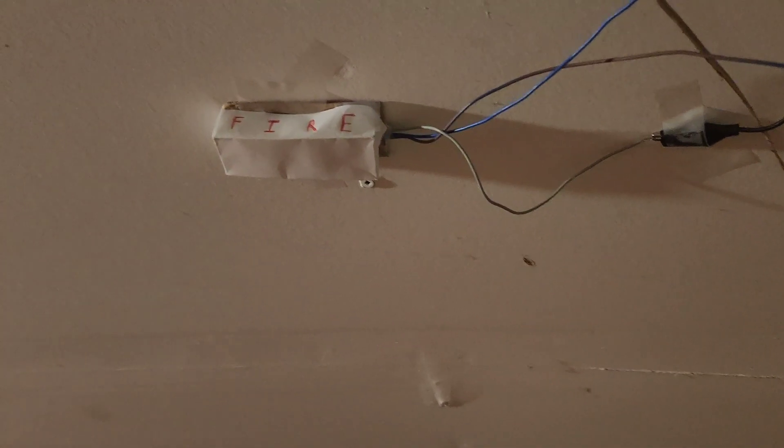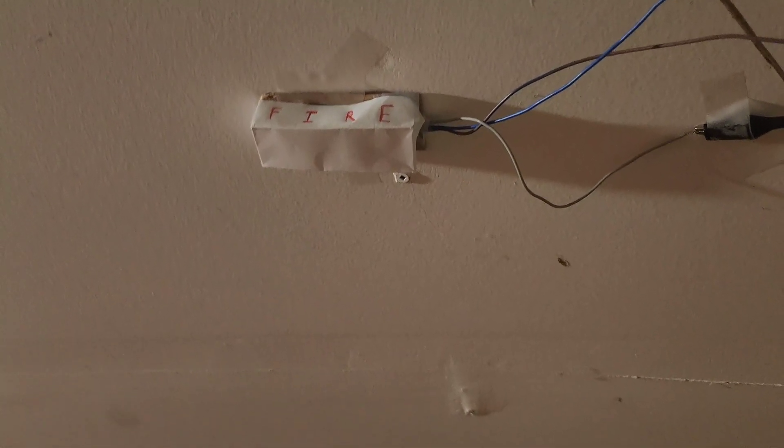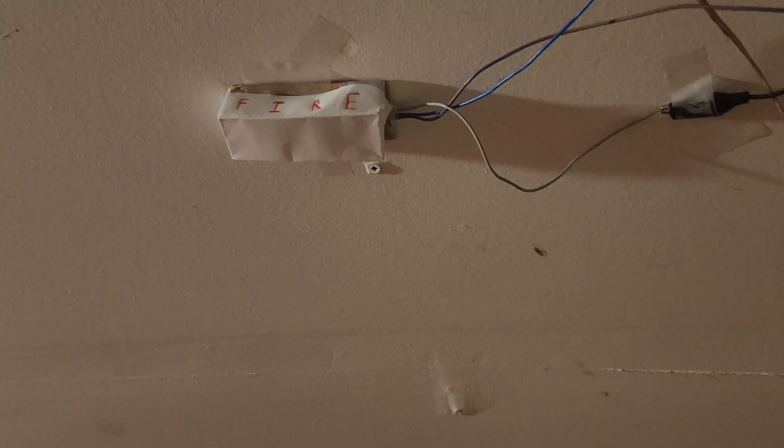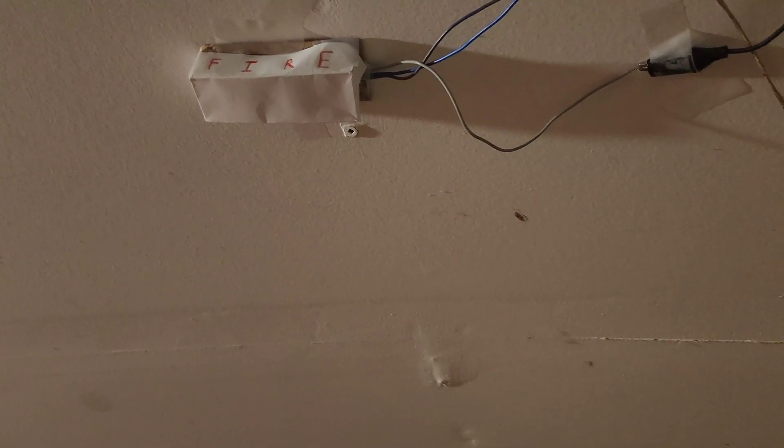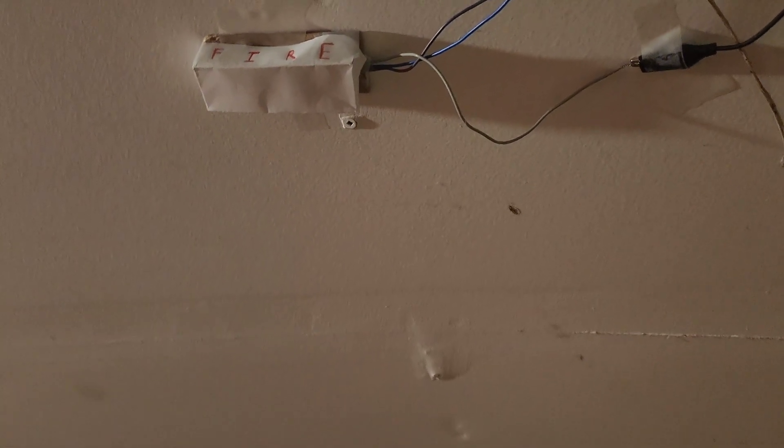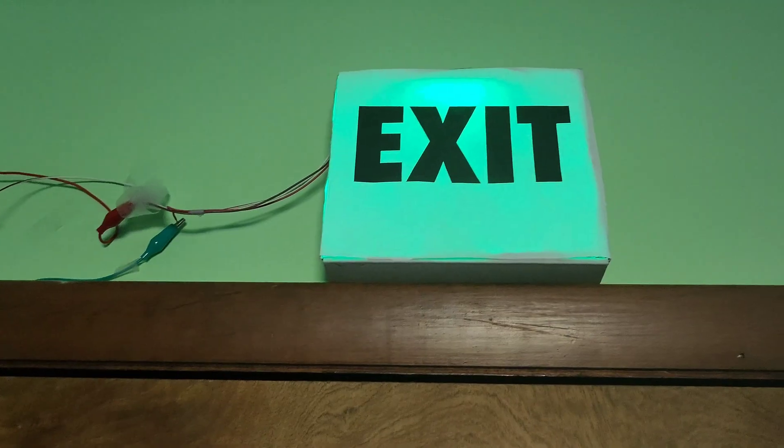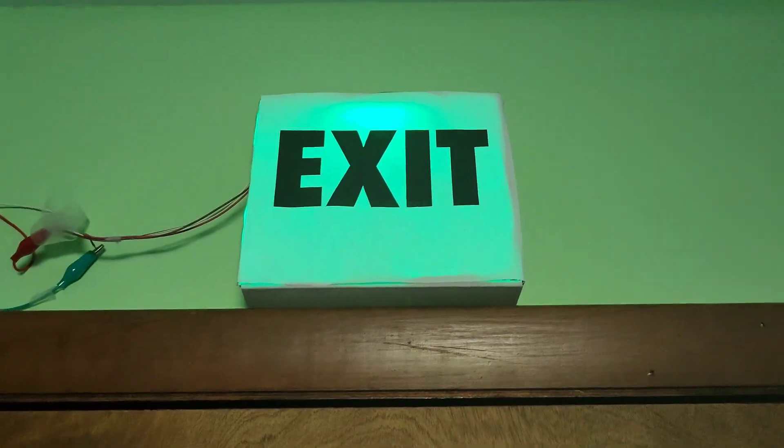Those wires I was showing earlier go to this strobe light up here, which is this fire alarm bell. It blinks, you know, it's got that neopixel LED strip. It just flashes white. It's kind of boring, but it's a strobe light, it's what it's supposed to do, just flash white. Then up in my room we got this exit sign.